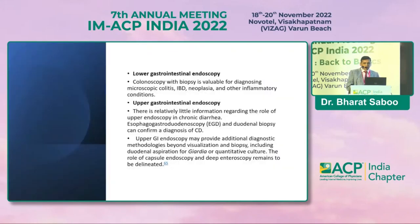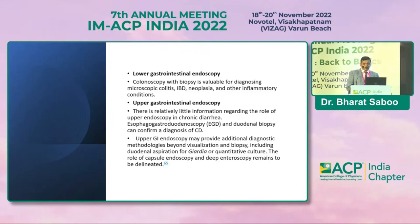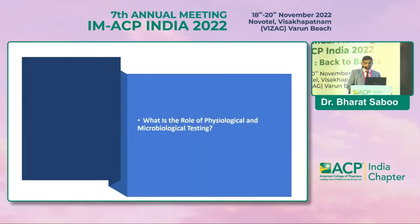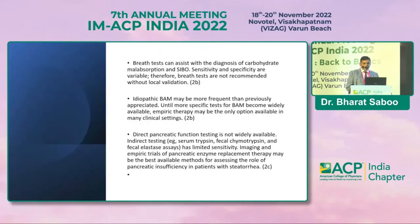Lower GI endoscopy — colonoscopy with biopsy — is valuable for diagnosing microscopic colitis, IBD, neoplasia, and other inflammatory conditions. Upper GI endoscopy has a relatively limited role in chronic diarrhea, but esophagogastroduodenoscopy with duodenal biopsy can confirm a diagnosis of celiac disease and provide additional diagnostic methodology including duodenal aspiration for giardia.